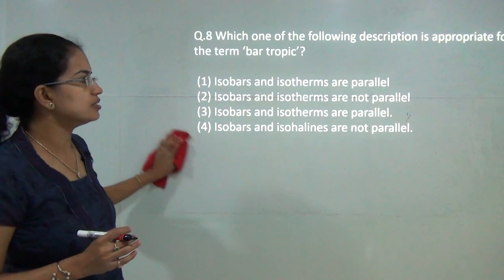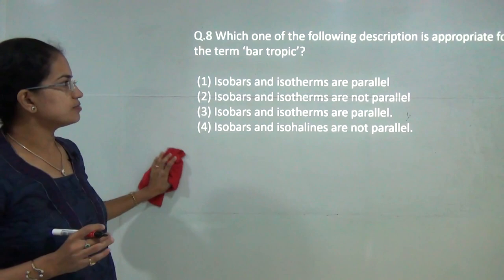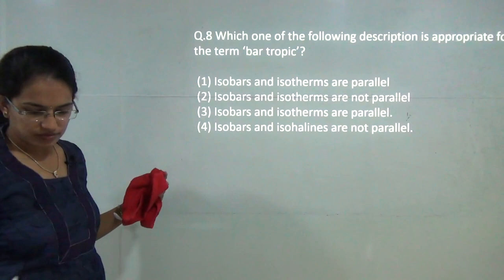Next question: what is biotropic? You have isobars and isotherms which are running parallel to one another. So isobars and isotherms are parallel to one another would be the correct answer.